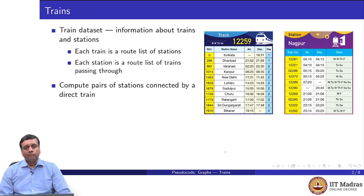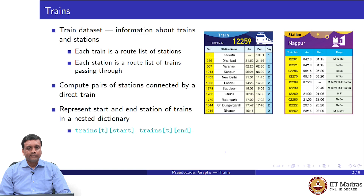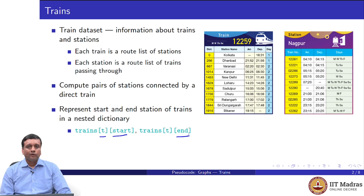Let us start with the most basic problem: we want to compute all pairs of stations that are connected by a direct train. To make our problem a little easier, we are going to think of a direct train as one that starts at the first station and ends at the last station. We are not looking at stations which are connected by trains through intermediate stops. So for each train, we will construct a dictionary entry which has the train number as a key, and two entries for that train number — start and end — which is the station at which it starts and the station at which it ends.